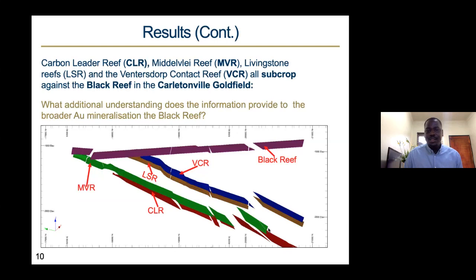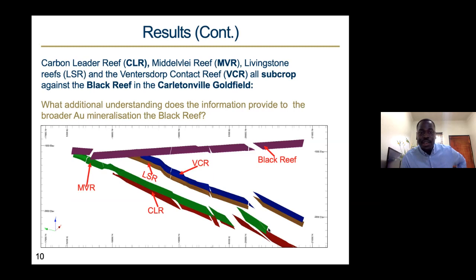All the boreholes drilled were utilized to reconstruct how the Black Reef geometry looks in this West Rand area, and from this I was able to reconstruct the model shown here. The advantage of the Carltonville Gold Field is that it's one of the few places where the Black Reef intersects more than three types of reefs — it intersects the Carbon Leader, the Midley Flare Reef, the Livingstone Reef, and the VCR. In other places, the Black Reef only sub-crops against the Kimberley Reef or one minor reef, making Carltonville quite unique.